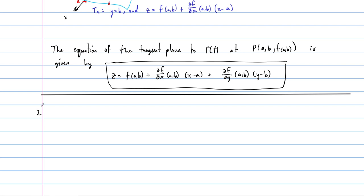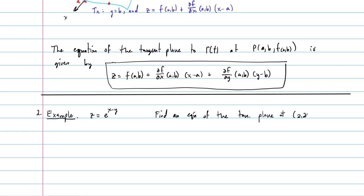That's our definition. Let's compute an example. Here is a function: z equals e to the (x minus y). We want to find the equation of the tangent plane at the point (2, 2, 1). You can verify that when x and y are both 2, z equals 1 by plugging in. Take a minute to try to work this out using the equation we just derived.